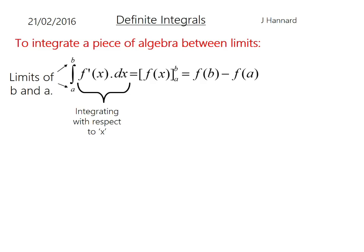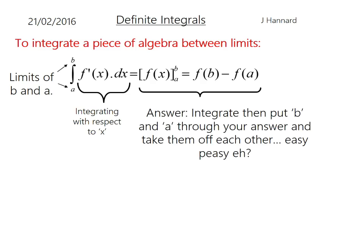That just means integrating with respect to x, adding 1 to the power, dividing by the new power. But the answer is to integrate and then put the B and A through and take them off each other. Easy peasy, you might think, once you put it that way.